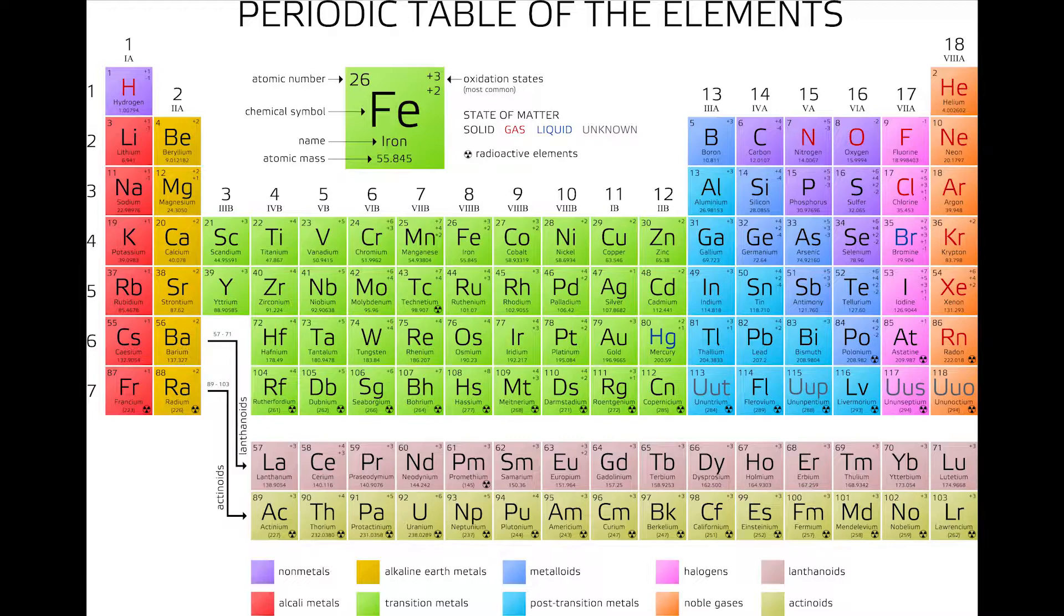Iron has an atomic number of 26, which tells you in a stable atom of iron, there are 26 protons and electrons. Elements have set characteristics. For example, iron is a solid at room temperature.